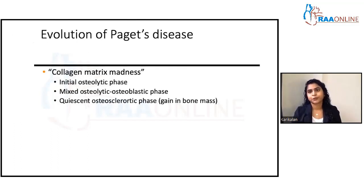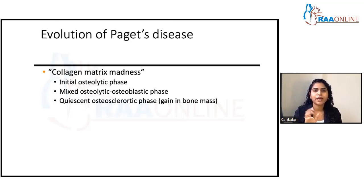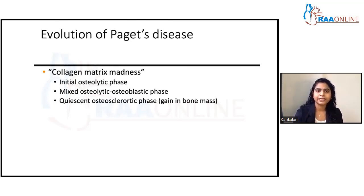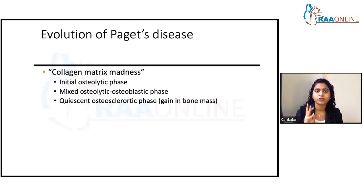For Paget's disease, remember 'matrix madness' — the matrix goes mad. The first thing that goes mad is the osteoclast. Imagine what happens if the osteoclast goes mad — it will madly eat up all the bone. The osteolytic phase is the first phase. There are three phases in this disease.